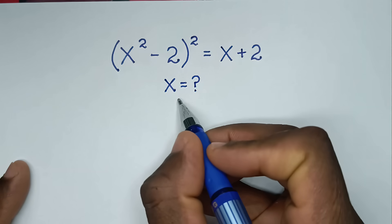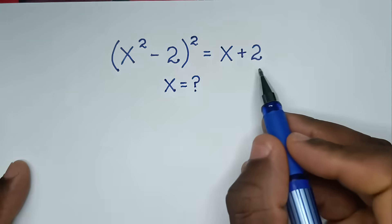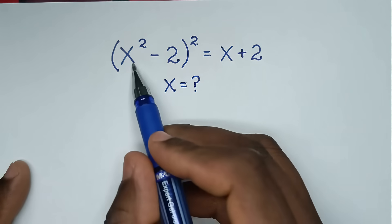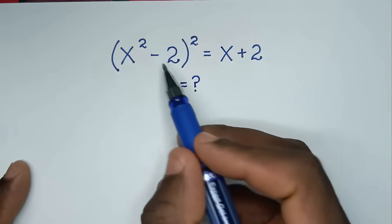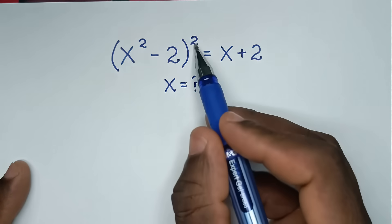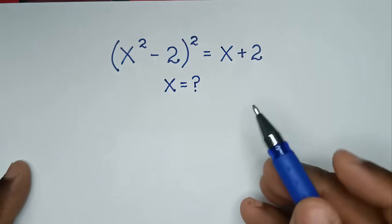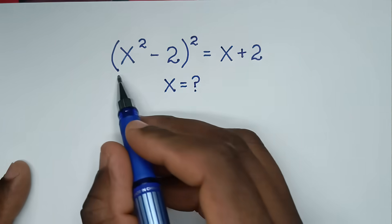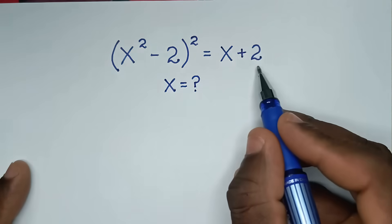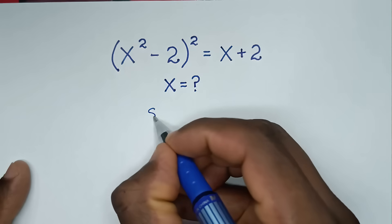Hello, you are welcome to solve this math problem, which is (x² - 2)² = x + 2. To find the values of x from this equation, now solution.